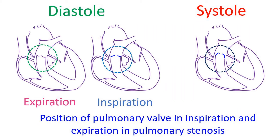Regarding the mechanism of the phasic ejection click: during inspiration, systemic venous return increases and enhances right ventricular filling. This elevates the right ventricular end-diastolic pressure, causing a cephalad excursion of the pulmonary valve at the end of diastole. Hence, the opening movement during systole is less, as the valve is already partially domed at the end of diastole.